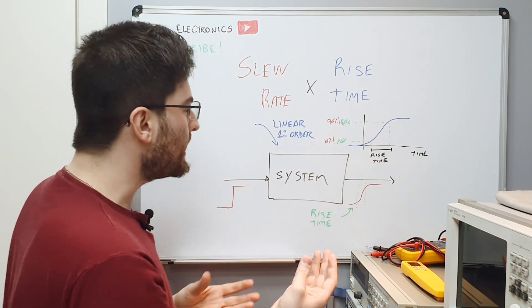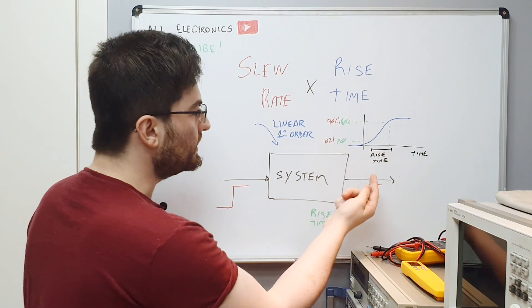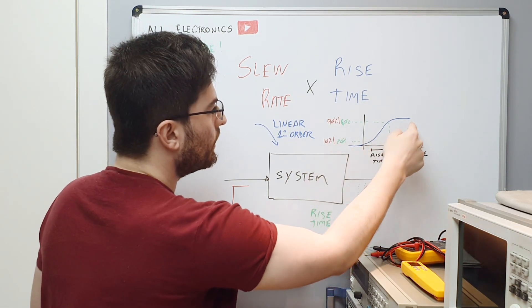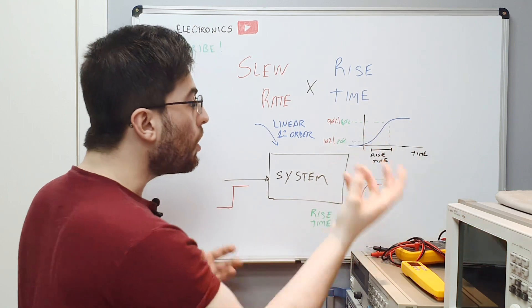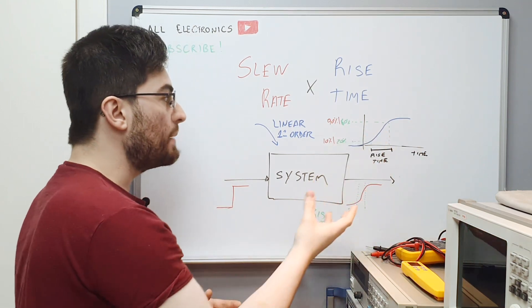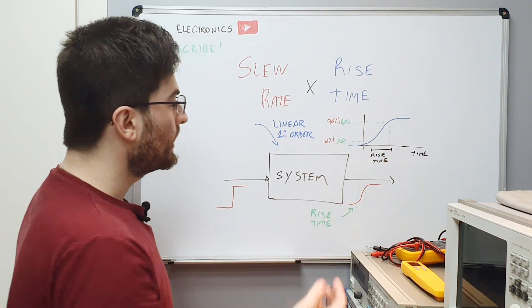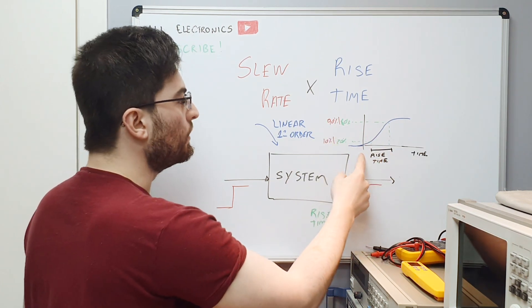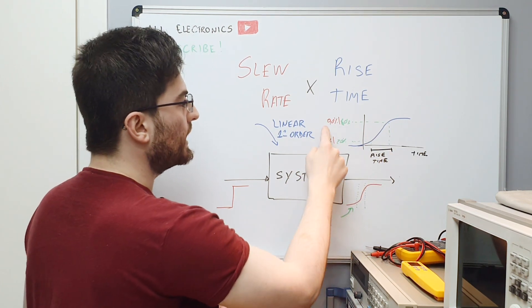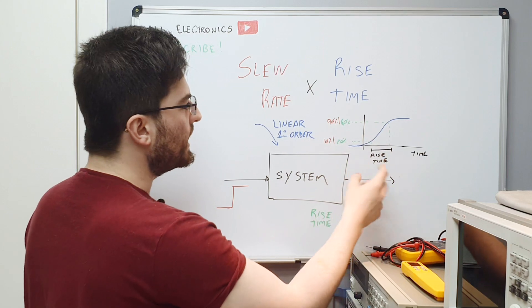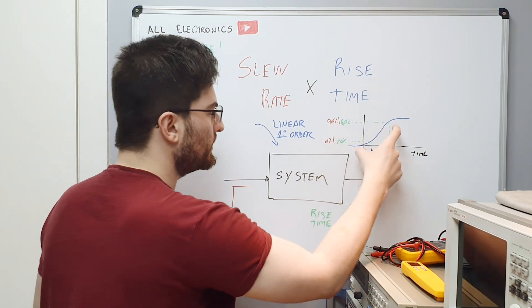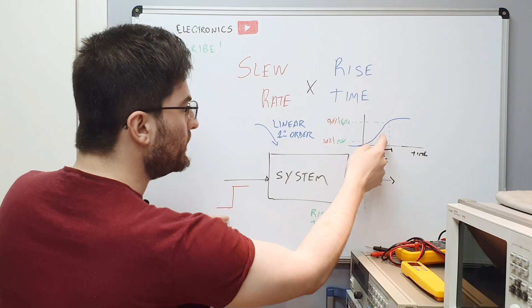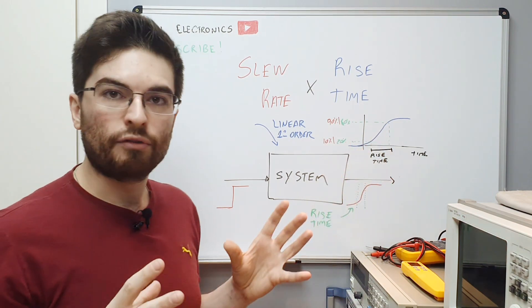It's the time it takes for the signal to go from 20% to 80% of the output level. Rise time can also be measured as 10% to 90%—the time it takes for the signal to go from 10% to 90%, or from 20% to 80%. This is rise time.